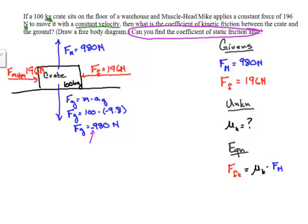Now I want to get μ_k all by itself on either the right or the left hand side. So I divide this side by 980. This allows me to cancel. But whatever I do to the right, I have to do to the left.